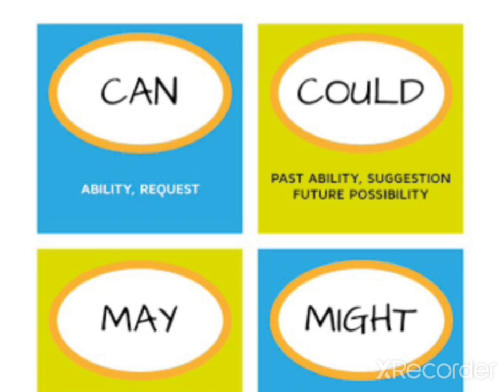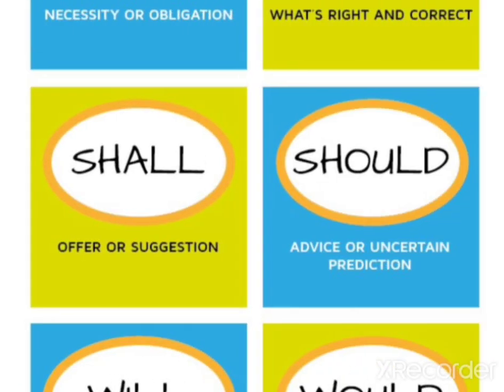Let us see a few more examples. 'Must' is used for necessity or obligation. 'Ought to' is used to describe what is right and correct. 'Shall' is used for offer or suggestion. 'Should' is used for advice or uncertain prediction. 'Will' is used for willingness, certain prediction, or promise. 'Would' is used for request, invitation, or making arrangements.